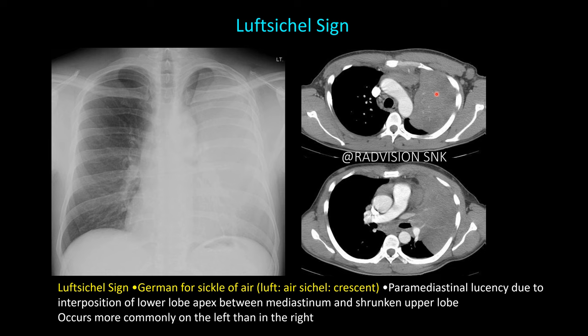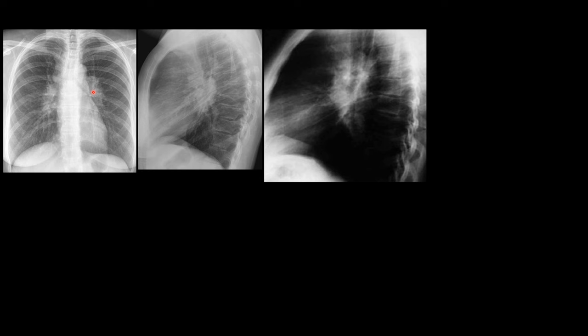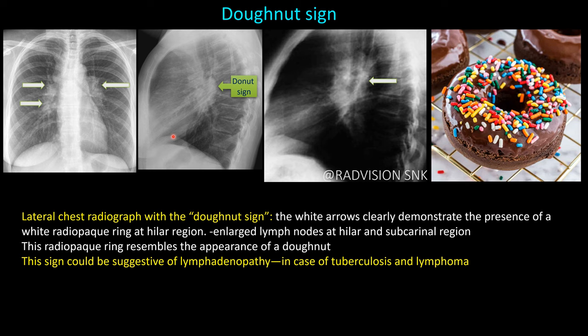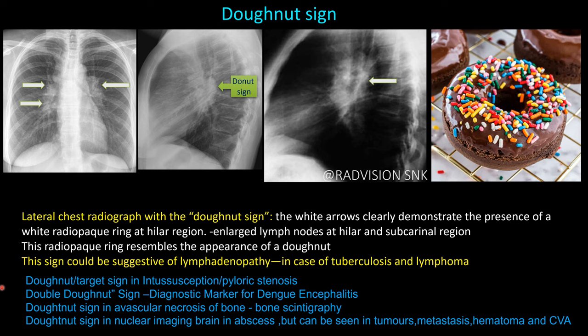Next case: bilateral hilar lymphadenopathy and subcarina lymph nodes are visible. On lateral radiograph, they mimic a radiopaque ring around the lucent bronchus — this is called the doughnut sign. The doughnut sign can be seen on lateral chest radiographs in tuberculosis and lymphoma. Remember also: doughnut sign in other radiology contexts — target sign in intussusception or pyloric stenosis, double doughnut sign in dengue encephalitis, doughnut sign in AVN on bone scintigraphy, and doughnut sign in nuclear brain imaging in abscess, tumors, vascular malformations, metastasis, hematoma, and CVA.